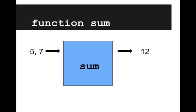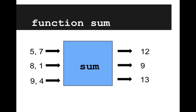It's going to print out the result. So 5 plus 7 would be 12. Similarly, if we called sum with 8 and 1, we'd get 9, or 9 and 4, we'd get 13.